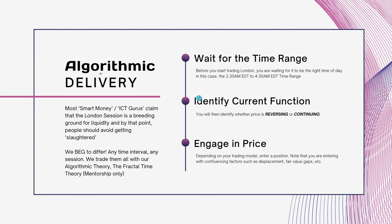Understanding the basic function of price is the most important thing for any model to work. Most smart money community leaders claim that the London session is a breeding ground for liquidity and people should avoid getting slaughtered. I beg to differ — using the algorithmic fractal time theory, we trade all sessions. For this model, you are viewing the London session as an isolated bubble, treating it as its own independent variable that is fixed in time.